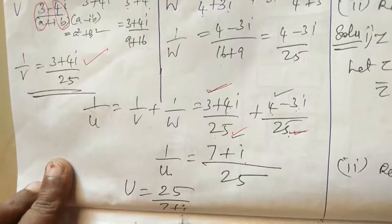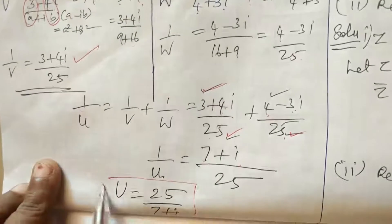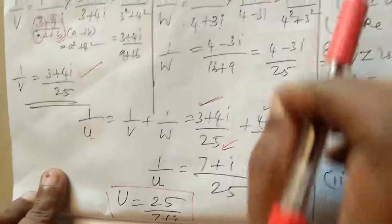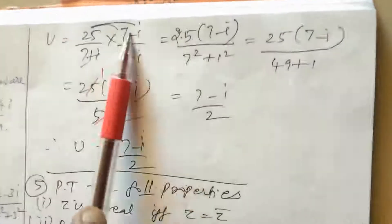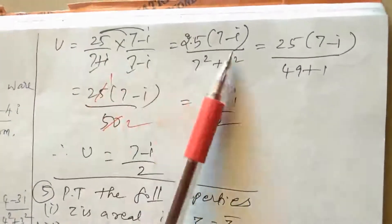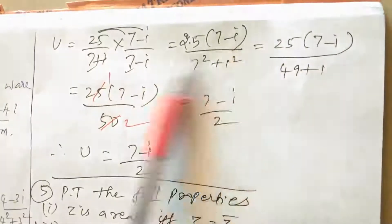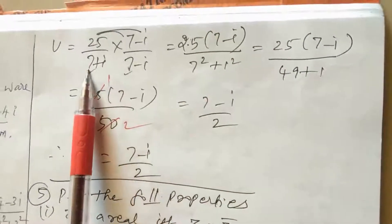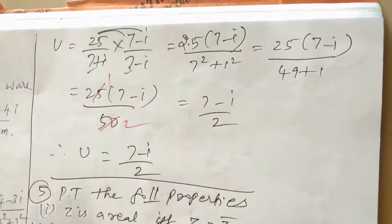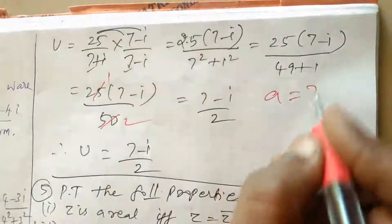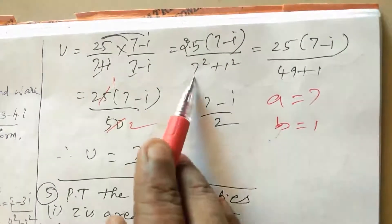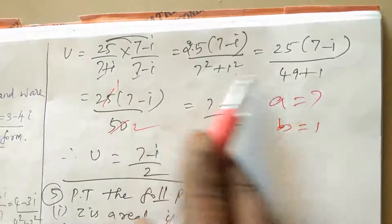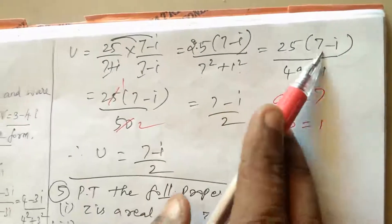So 1/U equals (7 plus i)/25. To find U in rectangular form, we need the conjugate of the denominator. Multiplying: 25 into (7 minus i) divided by (a squared plus b squared), where a is 7 (so 7 squared is 49) and b is 1 (so 1 squared is 1). Therefore 49 plus 1 is 50. So U equals 25(7 minus i) divided by 50.